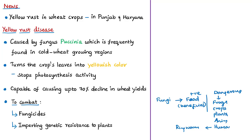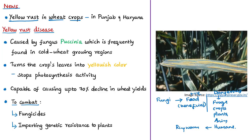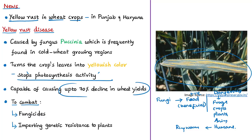The fungal infection discussed in this article is called yellow rust. Due to this fungal disease, the leaves of wheat crop turn yellow, stopping photosynthesis activity and leading to a significant drop in productivity. This disease is also called 'striped rust of wheat.' The fungus that causes it is Puccinia. This infection has been reported for the last seven to eight years in the northwestern plain zone and northern hill zone of India.